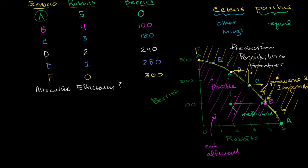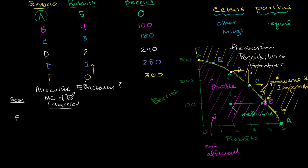Let's write down the different scenarios and think about the marginal cost of one incremental rabbit, given in berries. Starting with scenario F: if we want to get one extra rabbit, we are going to have to give up 20 berries. In scenario E, if we're sitting there and want one more rabbit, we now have to give up 40 berries.